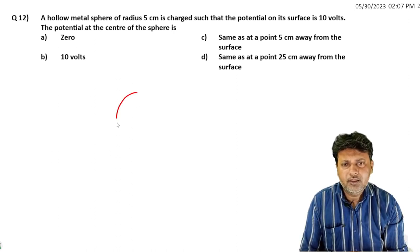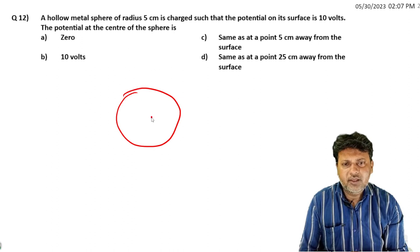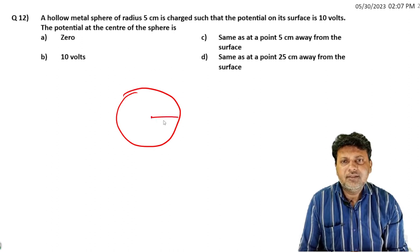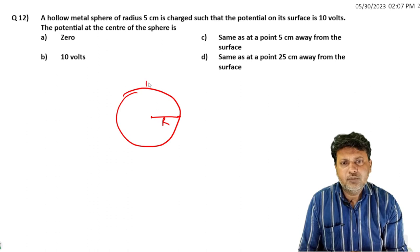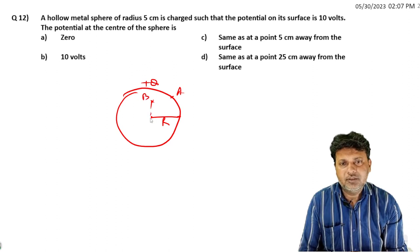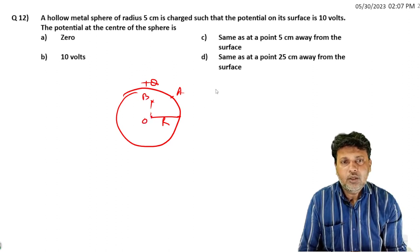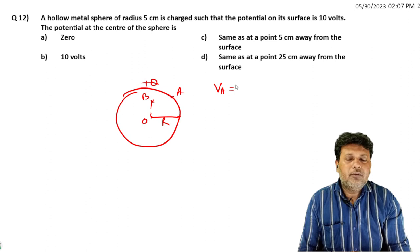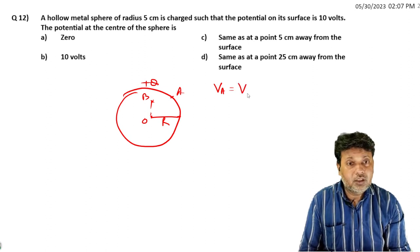It's a simple question. A metallic sphere, okay. The radius of the sphere, the surface, the center of the sphere. The potential of the sphere, the shape of the sphere.